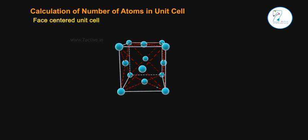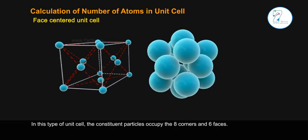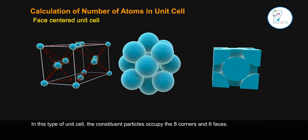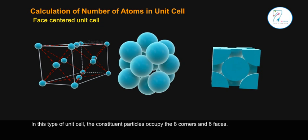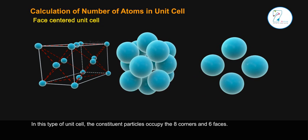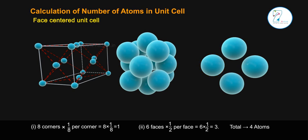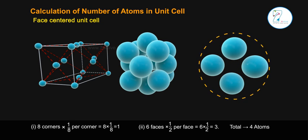Face-centered unit cell: In this type of unit cell, the constituent particles occupy the eight corners and six faces. So the total number of atoms in one unit cell: (1) 8 corners × (1/8) per corner = 1. (2) 6 faces × (1/2) per face = 3. Total: 4 atoms.